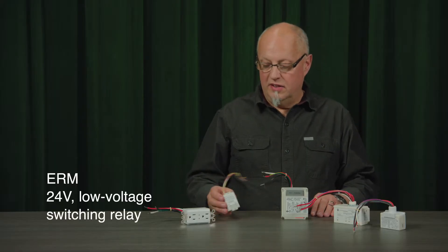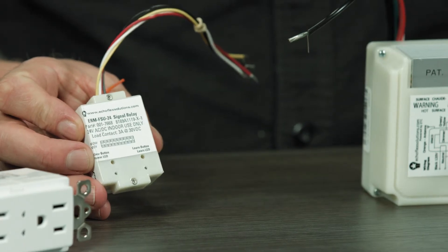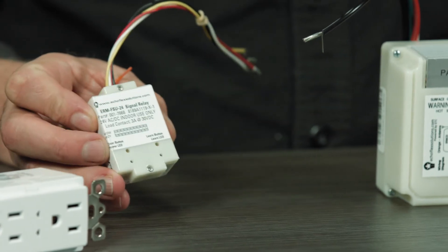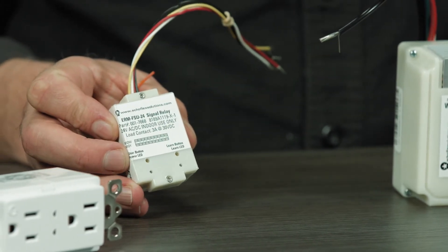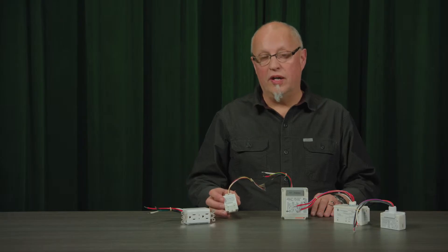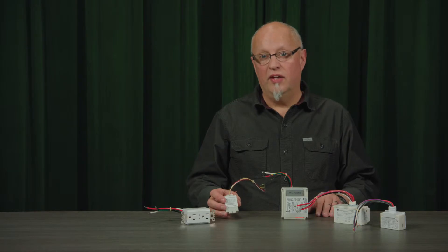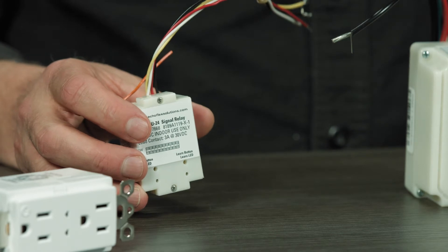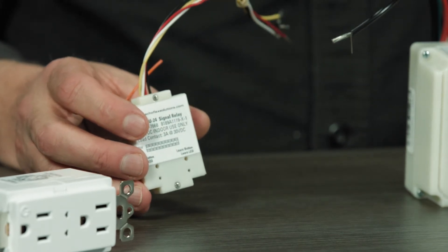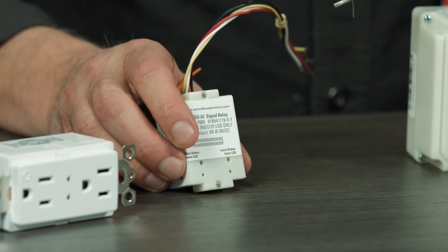Moving over to my right, this is a low voltage version of our switching relay, the ERM model. And this is the 24 volt version. It also comes as a 120 through 277 volt version. It has a dry contact output and is excellent for HVAC integration applications, where you want to be able to take your lighting occupancy sensors, your wireless sensors, and link them into your HVAC system. This device will be powered off of the 24 volt from the HVAC controller and the dry contact can be wired in to one of the inputs for occupancy state for the HVAC controllers.